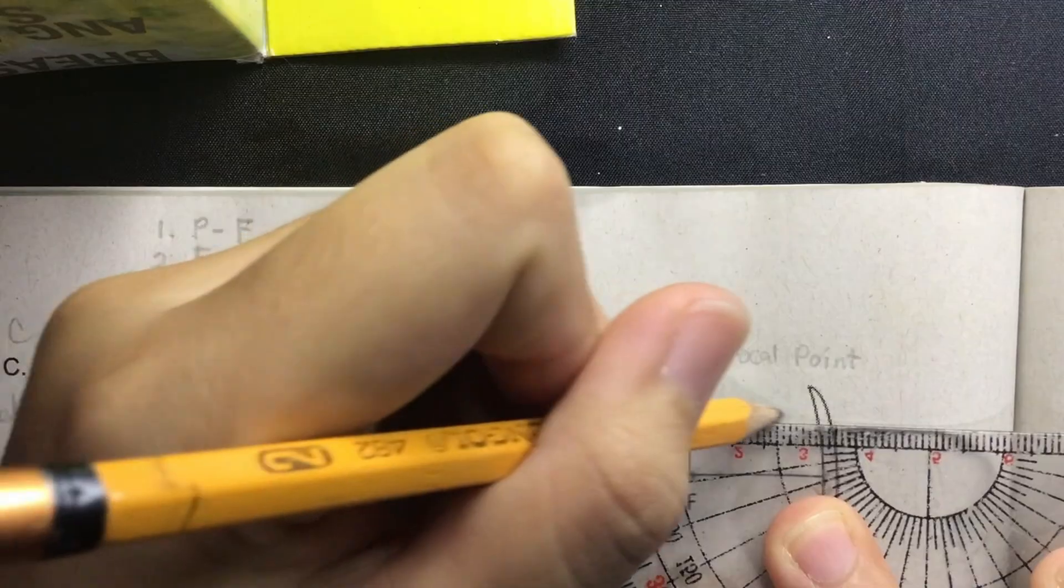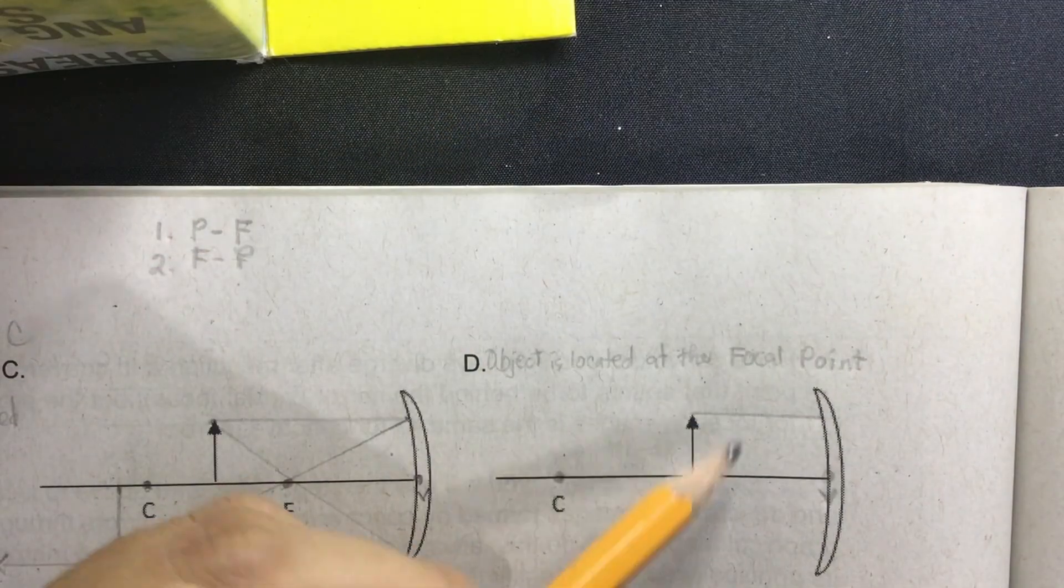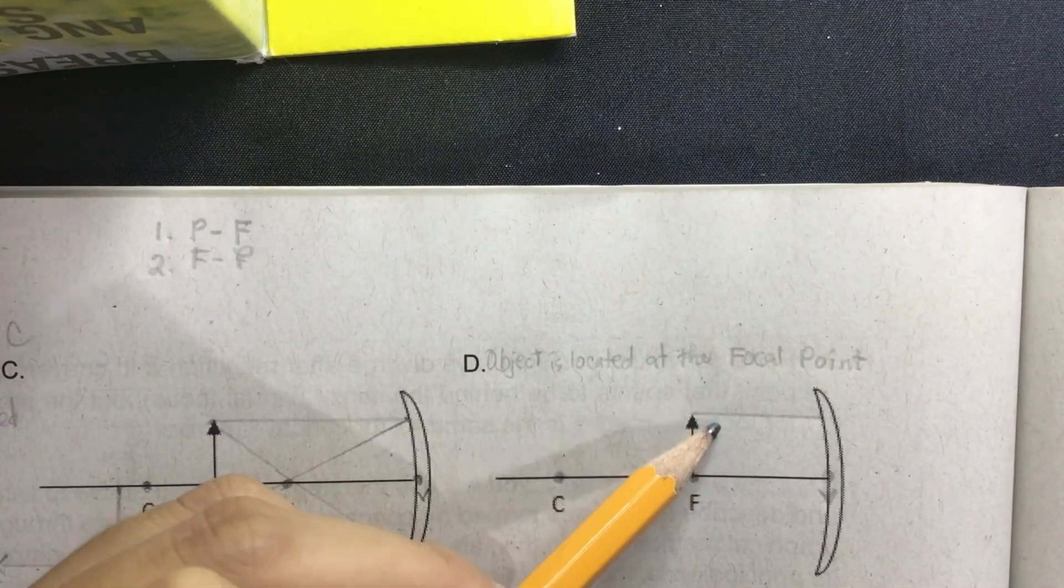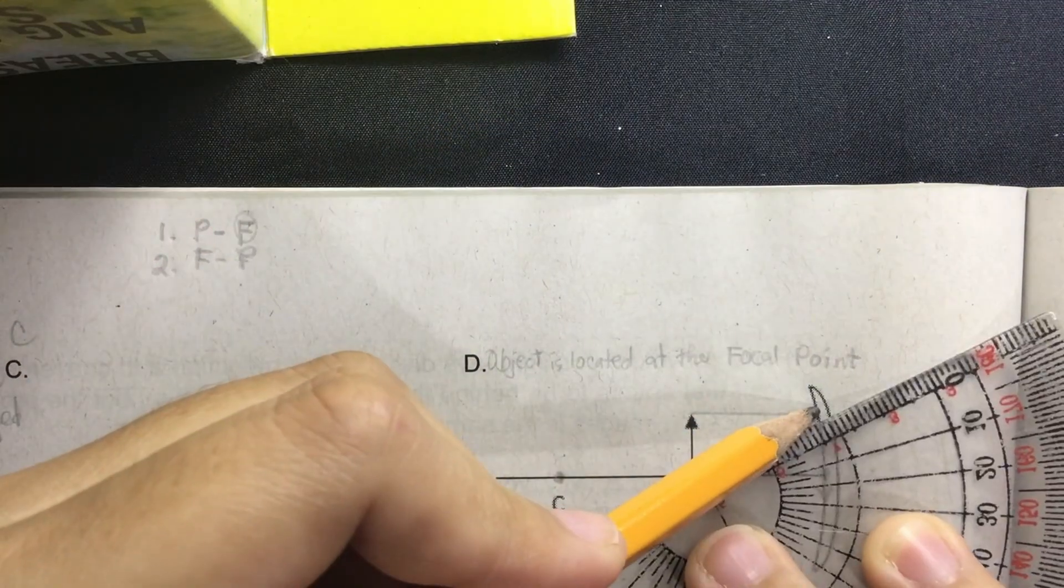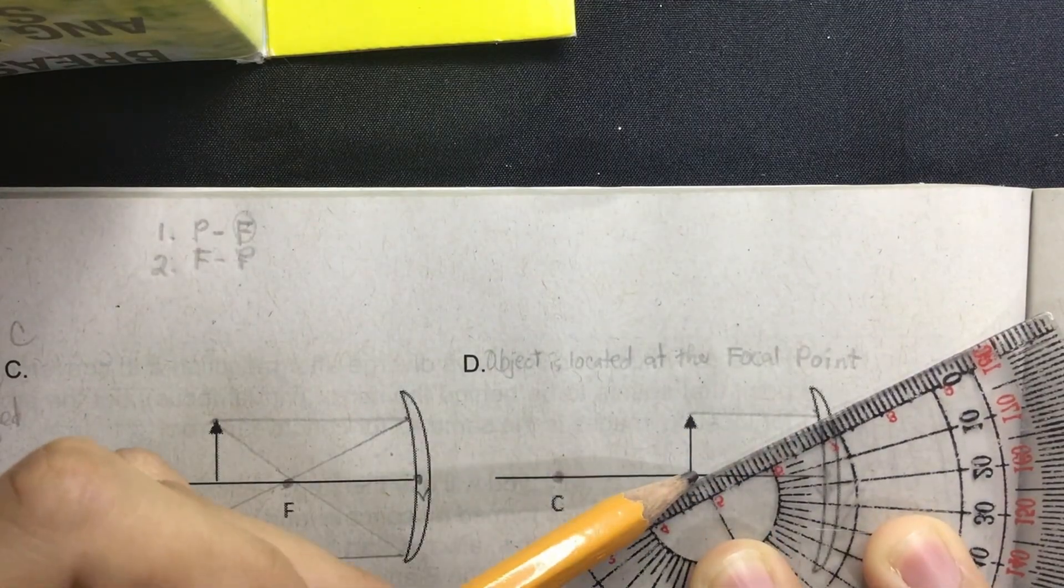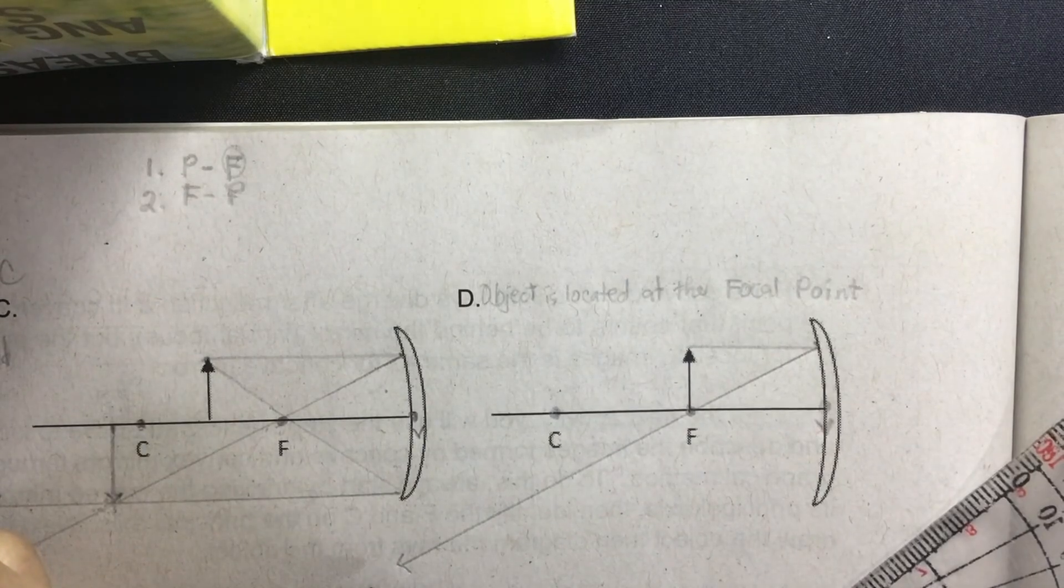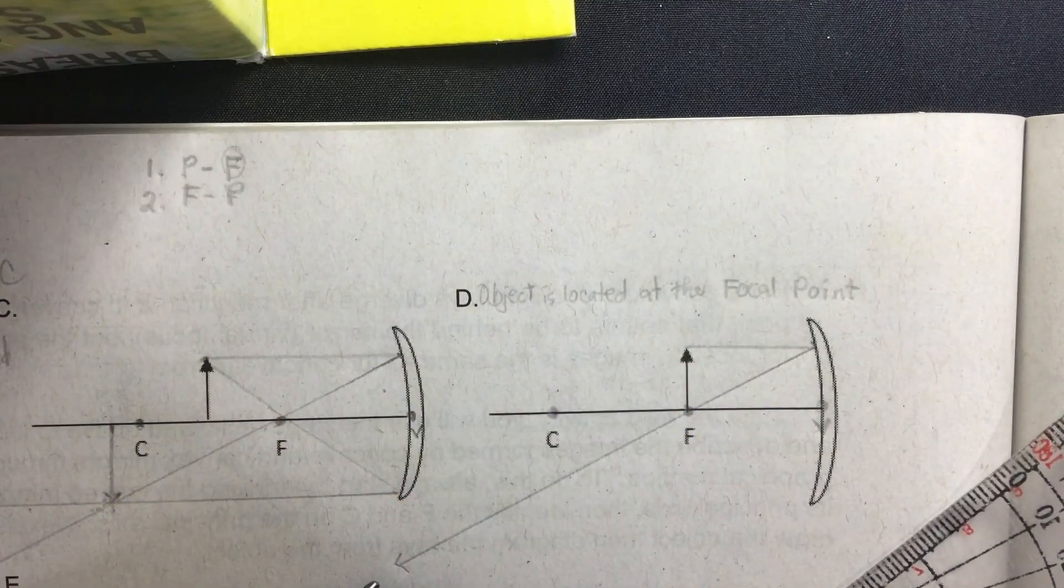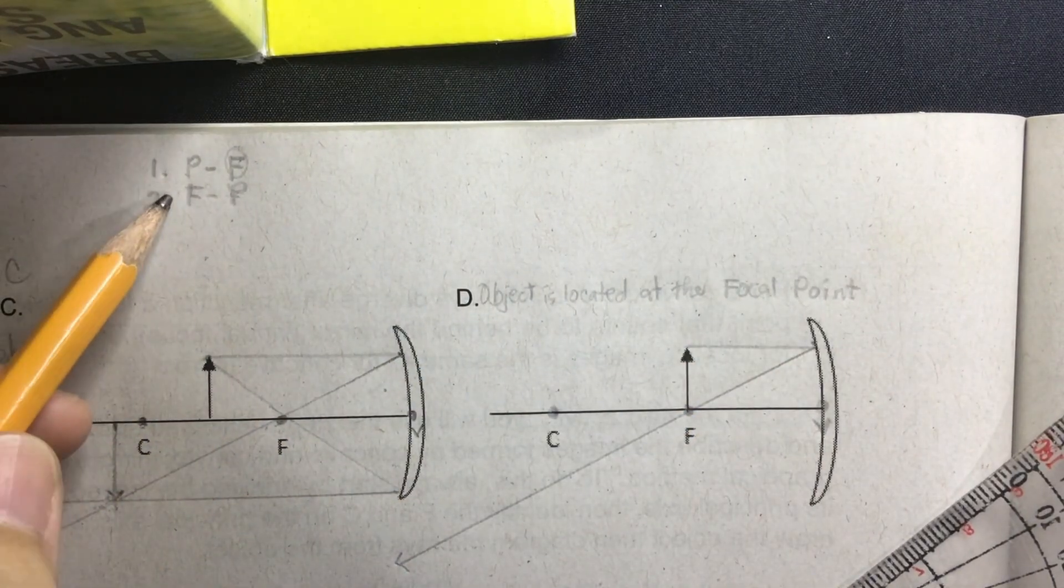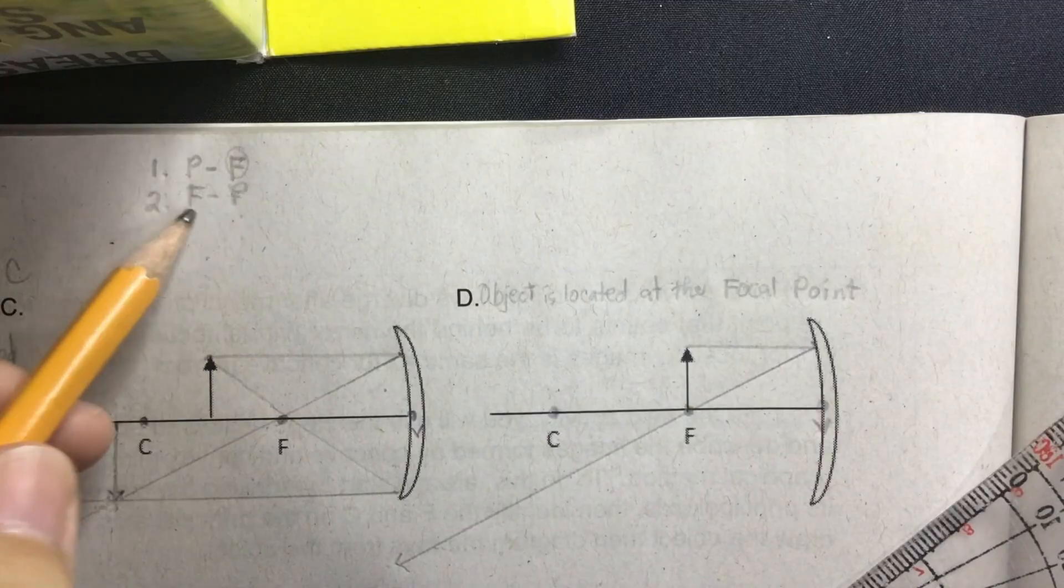So this is the P ray. Next, the reflected ray that is directed towards the focal point. So this is our PF ray. Next, the second principal ray is the FP ray. F is an incident ray that is passing through the focal point.